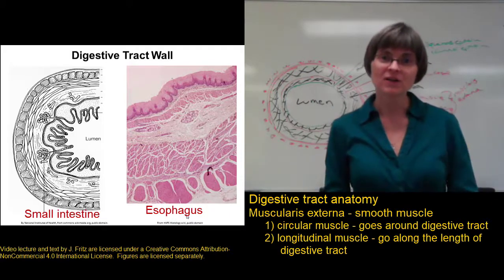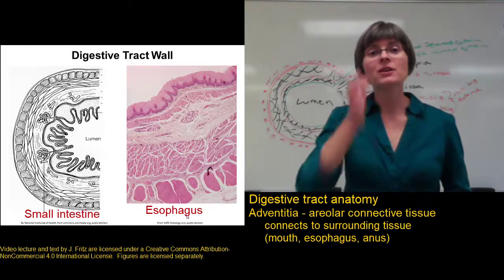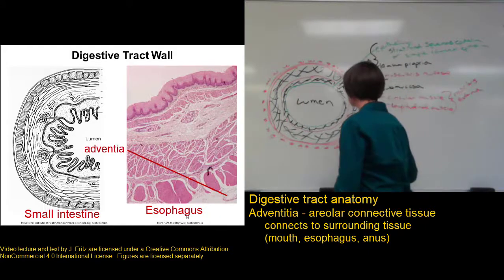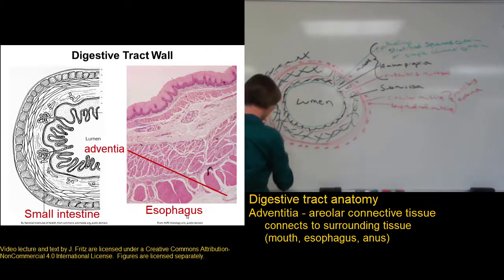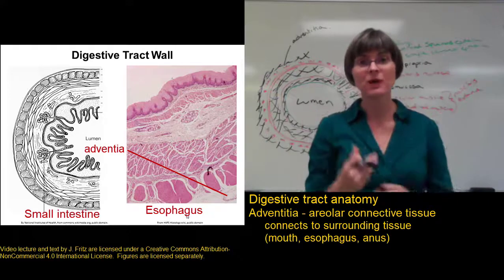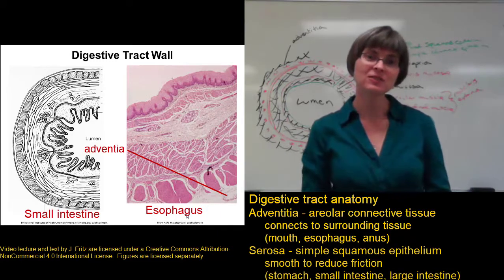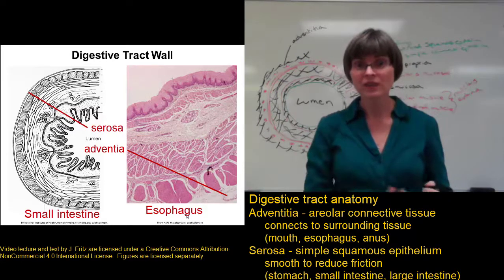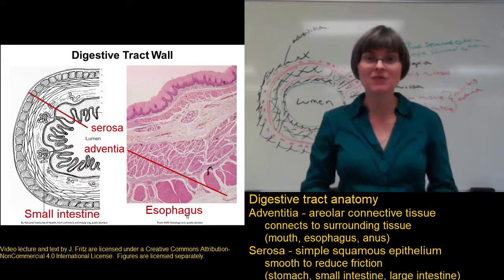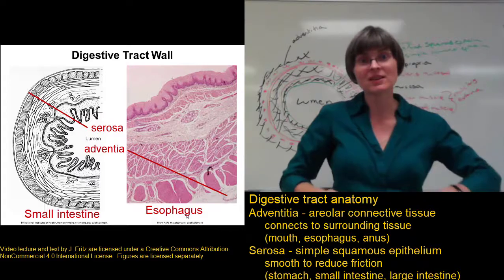Finally, we get to the outermost layer of the digestive tract wall. Depending on where we are in the digestive tract, this layer can have different names and a different structure. In the mouth, esophagus, or the anus, it's a layer of connective tissue called the adventitia, which helps to connect the digestive tract in those areas to the surrounding tissues. If we're looking at the stomach or the small or large intestine, instead of connective tissue we have a layer called the serosa — a layer of simple squamous epithelium that allows for smooth movement, because these organs move around in the abdominal cavity and the serosa is a nice, smooth, shiny layer that allows them to slide more easily against each other.